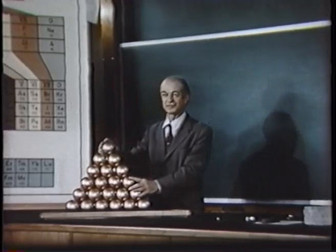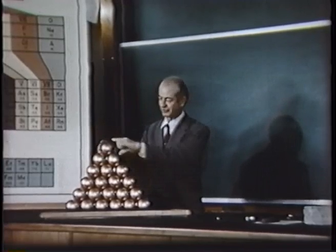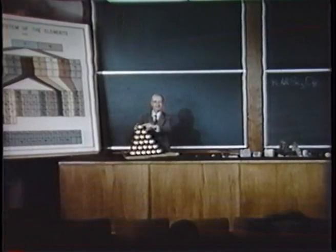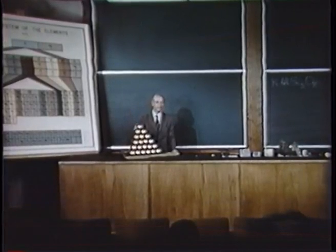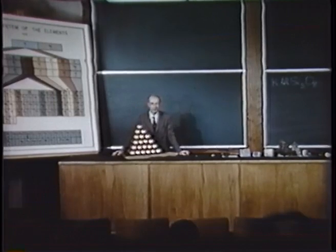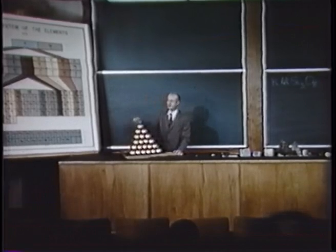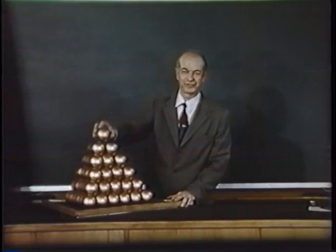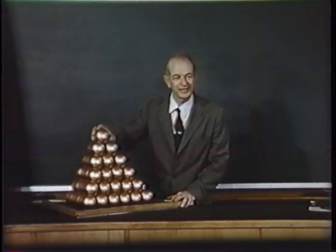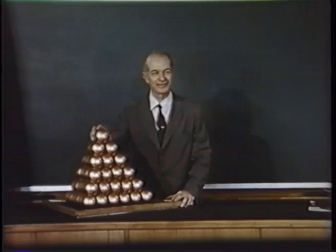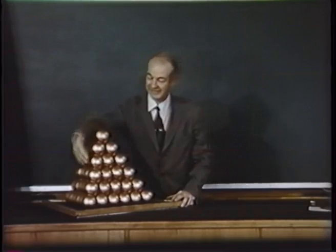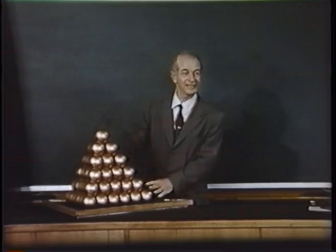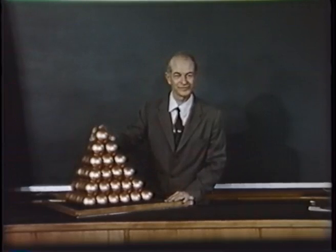There is no way of getting a given number of spheres into a smaller volume than by arranging them in closest packing. Each copper atom is 2.55 angstrom away from its neighbor. We may say that the effective diameter of the copper atom in copper metal is 2.55 angstrom. One angstrom is a hundred millionth of a centimeter — ten to the minus eight centimeters. This crystal of copper with this structure is a cubic crystal. The octahedron is closely related to the cube.